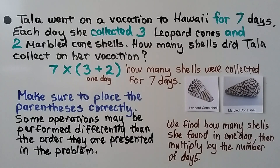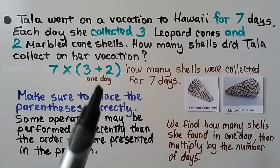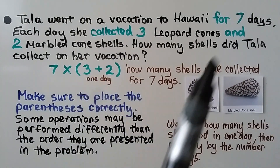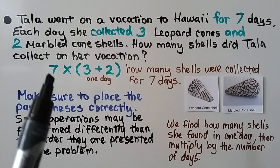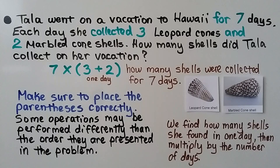Tala went on vacation to Hawaii for 7 days. Each day she collected 3 leopard cones and 2 marbled cone shells. How many shells did Tala collect on her vacation? We write 3 plus 2 for 1 day. Since she did it for 7 days, we have 7 times (3 plus 2) in parentheses. That's how many shells were collected over 7 days.